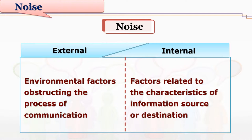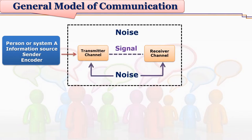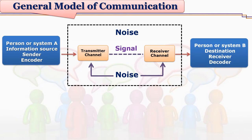Keeping this interpretation of noise in mind, let us discuss the general model of communication. The simple model says that a message passes from one person or system to another. Person or system A is the main information source who sends the message by encoding. This message travels through a signal, and in the mass communication model, a transmitter channel and receiver channel are required to transmit signals to person or system B, the destination.